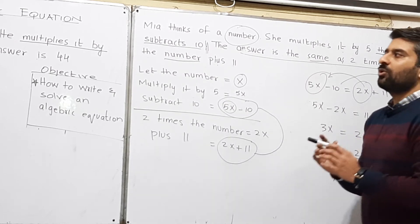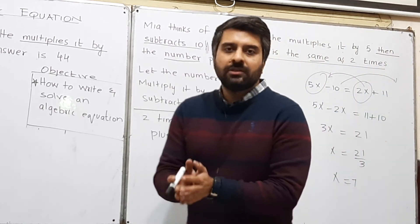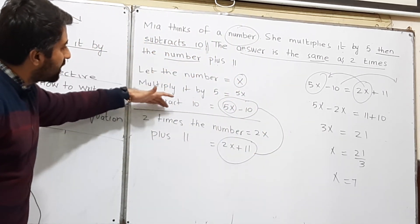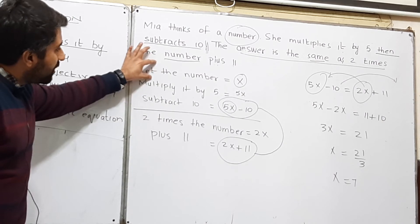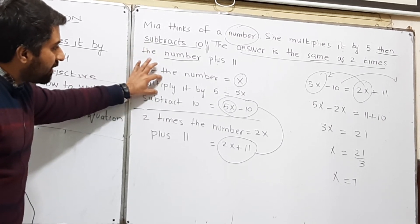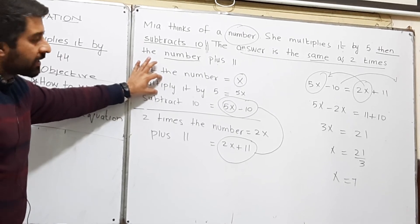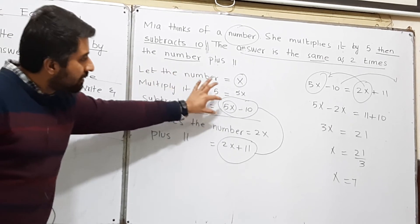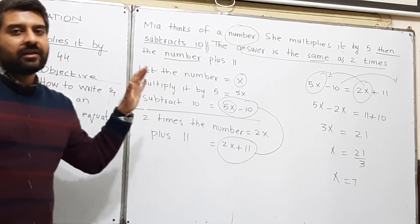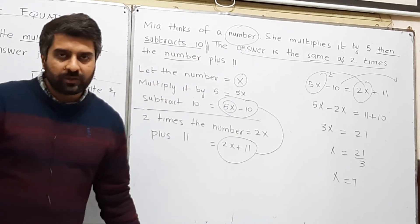That is how you can form an algebraic equation. The process is to divide your equation in steps, write down each step. Let the number be x, multiplied by 5, then subtract 10. In this way, by dividing your question into steps, you can write an algebraic equation and solve it.